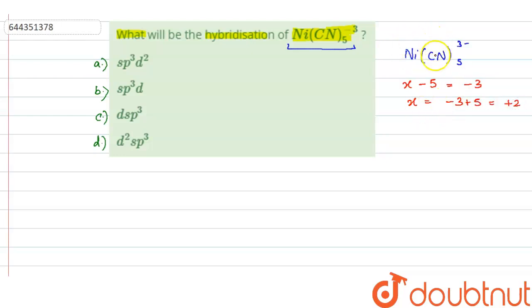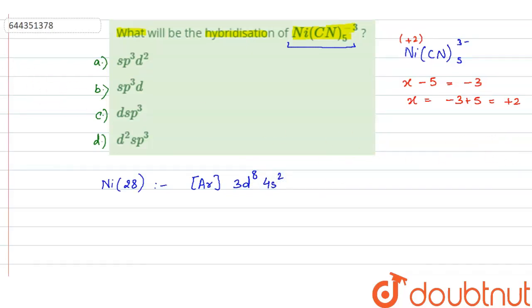It means in this complex nickel is having plus two oxidation state. Now nickel has atomic number 28, so when we write down its configuration it will be [Ar] 3d8 4s2. This is the configuration.